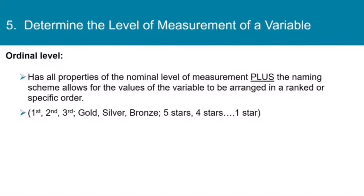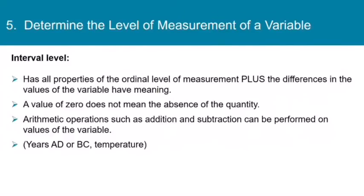So now let's step up from ordinal data to interval data. At the interval level, we have all the properties of the ordinal level, meaning we can put things in order, plus the differences in the values of the variable have meaning. So we're a step above ordinal. However, we're limited because a value of zero does not necessarily mean the absence of the quantity. We can do things like addition and subtraction, but we can't divide, like we can't say this is twice as much as that.